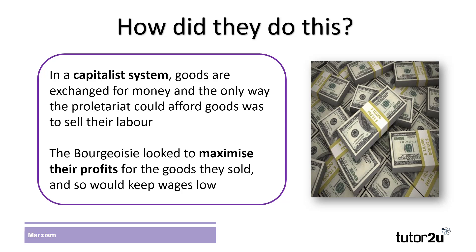How did they do this? Marx argued that in a capitalist society — one where goods are exchanged for money — the only way that the proletariat could afford these goods was through selling their labor to the bourgeoisie. As the bourgeoisie had control of the means of production, the proletariat could not produce goods for themselves and so were forced to sell their labor in return for wages. However, these wages were set by the bourgeoisie, and individual workers were left with the option of accepting low wages or being unable to support themselves and their families. This situation was made worse by the bourgeoisie's desire to maximize their profits, so they would look to keep wages as low as possible. As workers were limited in their ability to work elsewhere, they had little option but to accept these low wages.